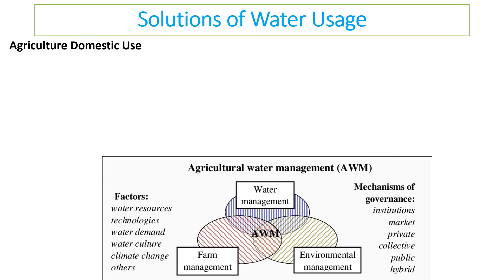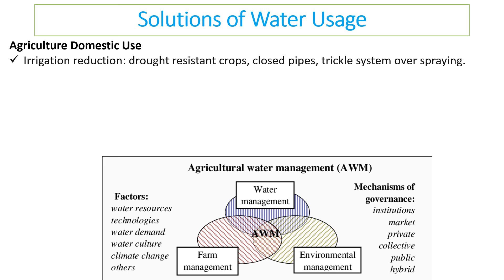Agriculture is a major issue that also links to domestic water use. We need irrigation reduction strategies: using drought-resistant crops, replacing open-field spraying with closed pipes delivering water exactly where needed, and using trickle irrigation systems that release water slowly. Spraying large amounts of water leads to high evaporation losses. We can also reduce pesticide use — less pesticide entering fresh water means higher water quality.